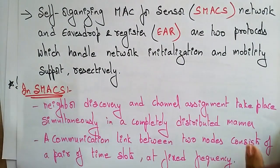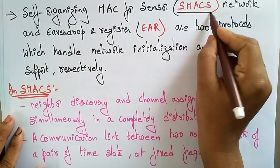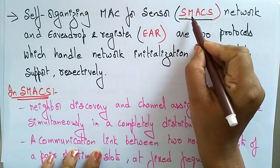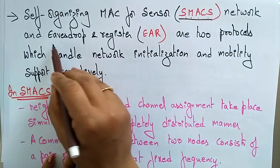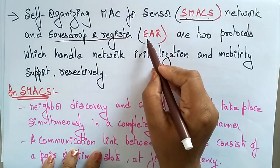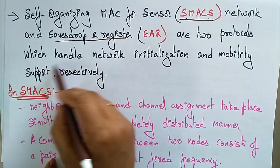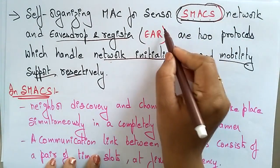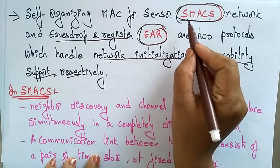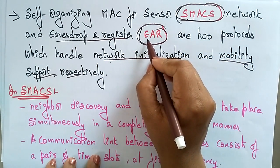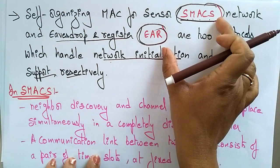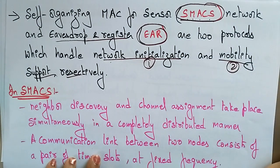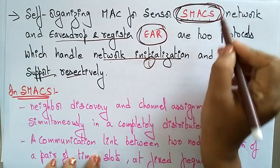Now let's see the Self-Organization MAC for Sensors, which is SMACS. There are two main protocols: SMACS (Self-Organization MAC for Sensor Networks) and EAR (Eavesdrop and Register). These two protocols handle network initialization and mobility support respectively.